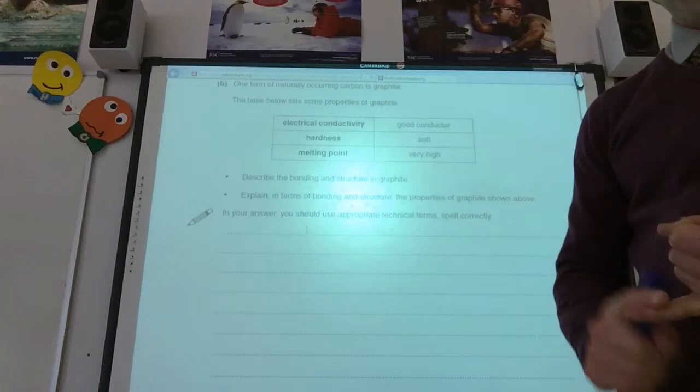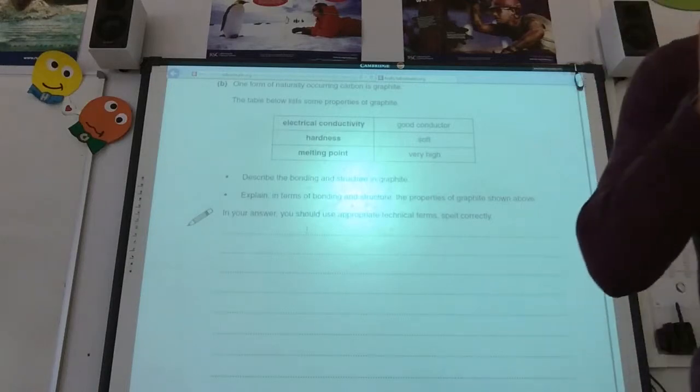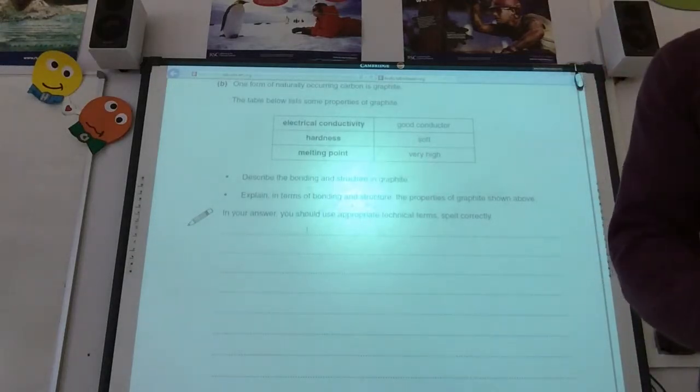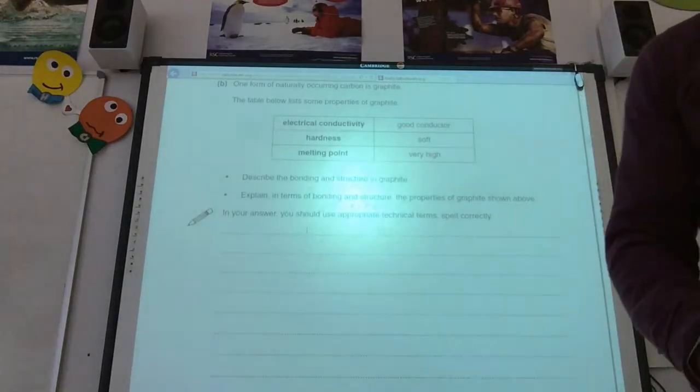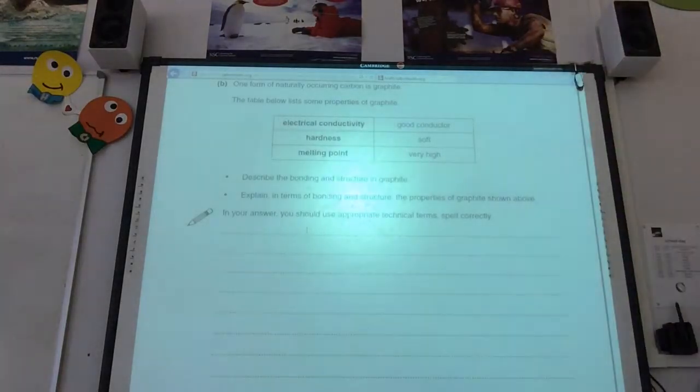So, key things, it's the five marker, giant covalent layers, good conductors because I've got mobile electrons, high melting point because I've got strong covalent bonds that have to be broken, and it's soft because I've got weak van der Waals forces between the layers.